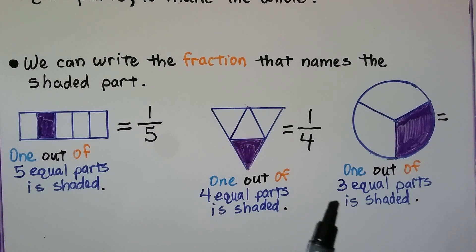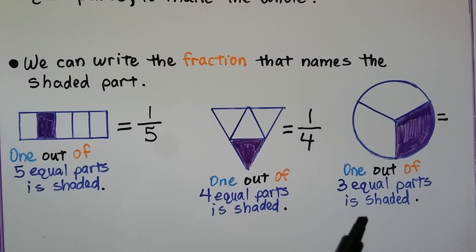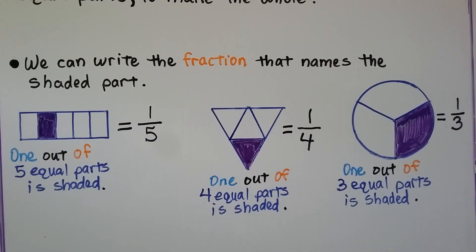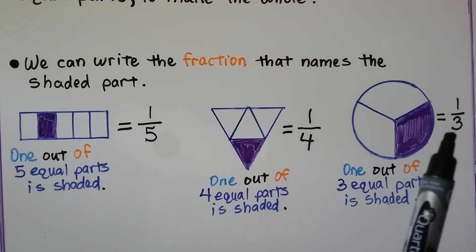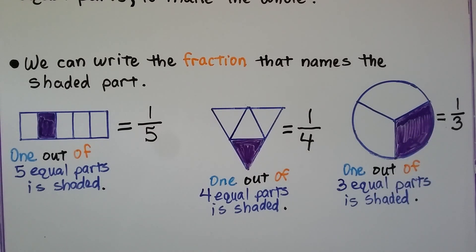In this circle, one out of three equal parts is shaded, so that would be one-third. One part is shaded out of three equal parts.